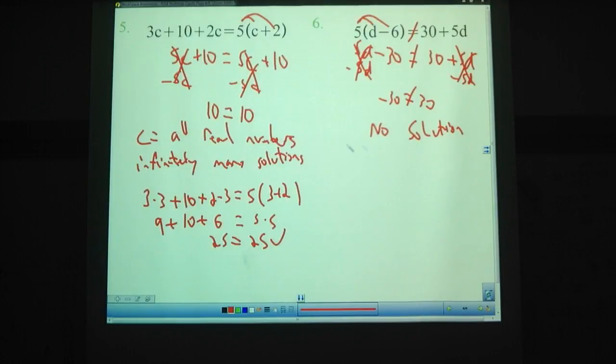We check a no solution one the exact same way we checked our other solution, all real numbers one. We choose a random number, see what happens. Let's go with 10. I'm feeling 10 this time. So 5 times the quantity 10 minus 6 equals 30 plus 5 times 10. So 10 minus 6 is 4, 5 times 4 is 20. Here, 30 plus 5 times 10 is 50, 30 plus 50 is 80. Here's the trick to this: 20 and 80 are 60 apart. 80 minus 20 is 60. 30 minus negative 30, also 60. These are also 60 apart. If we have the same distance apart each time, then we know that we've got a real no solution situation.